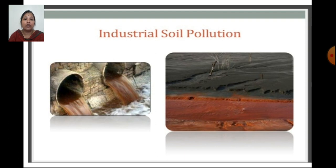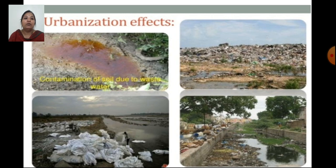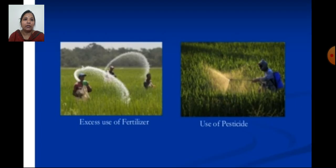Industrial soil pollution means waste from industries is let into or flows into the soil, polluting it. Various pictures show how contaminants and pollutants mix with the soil and pollute both the soil and water. Excess use of fertilizers and pesticides by farmers also pollutes the soil and water.